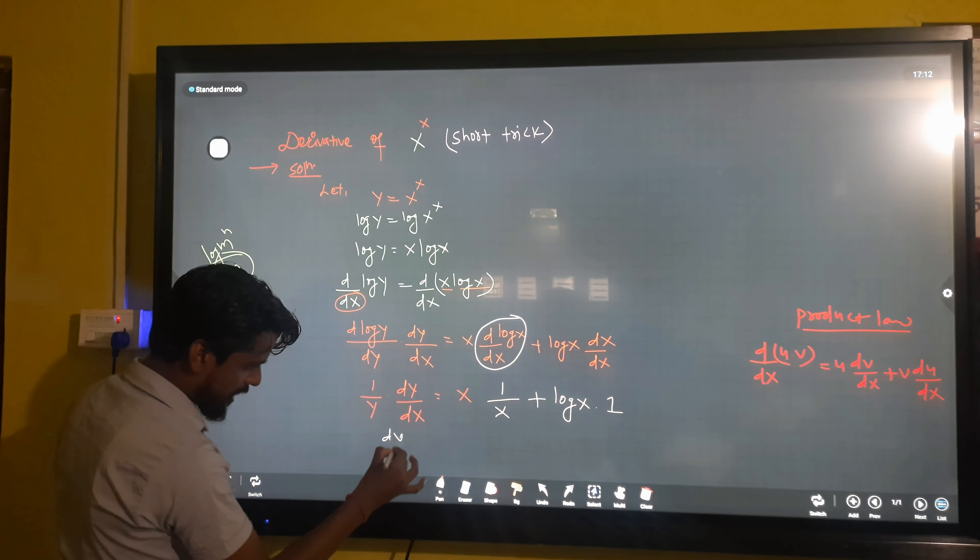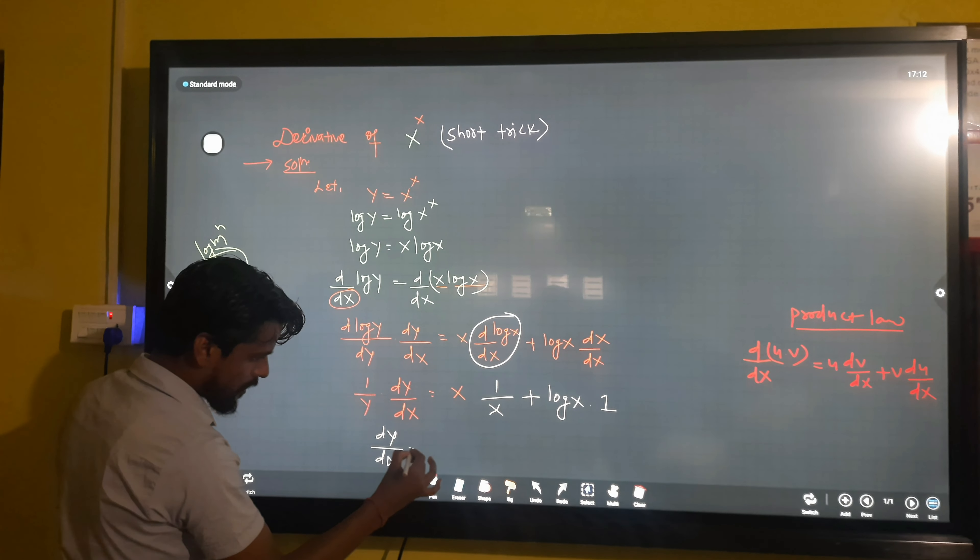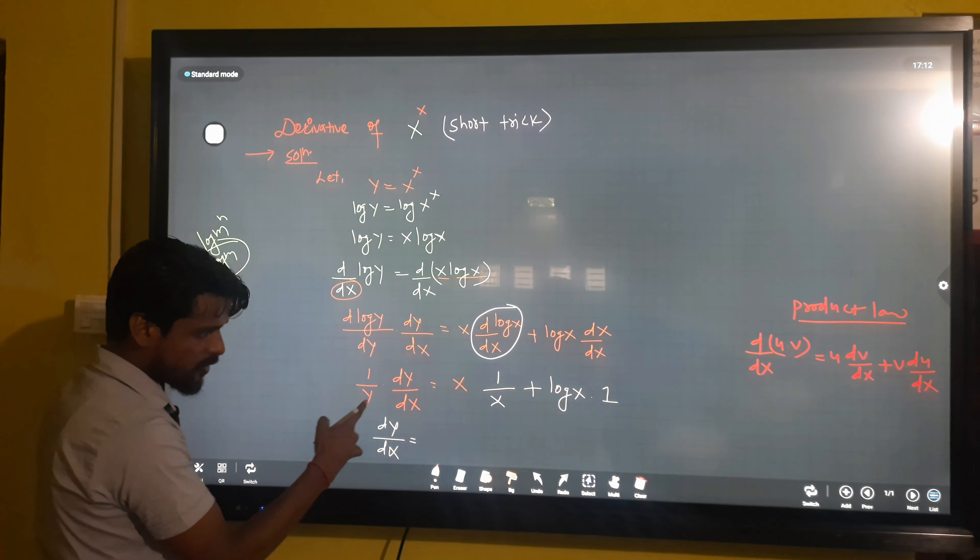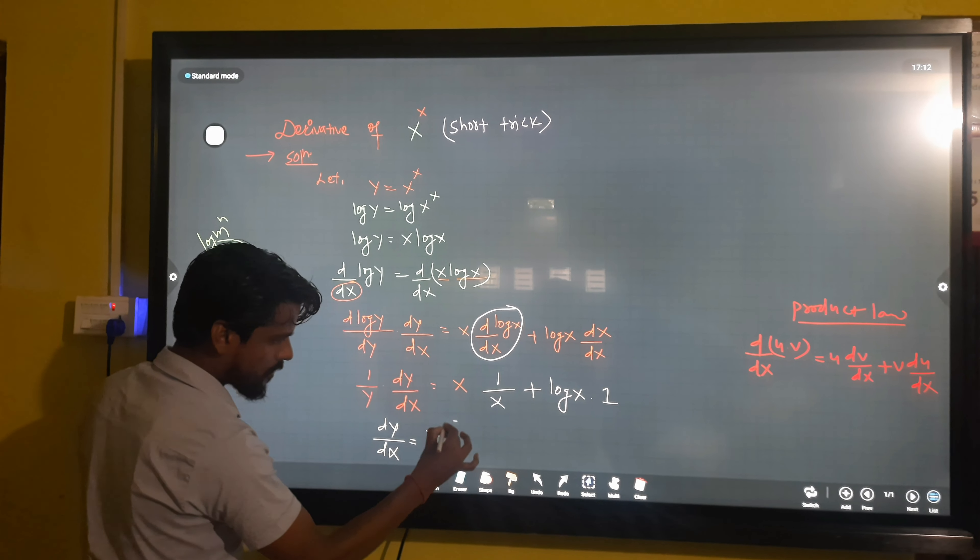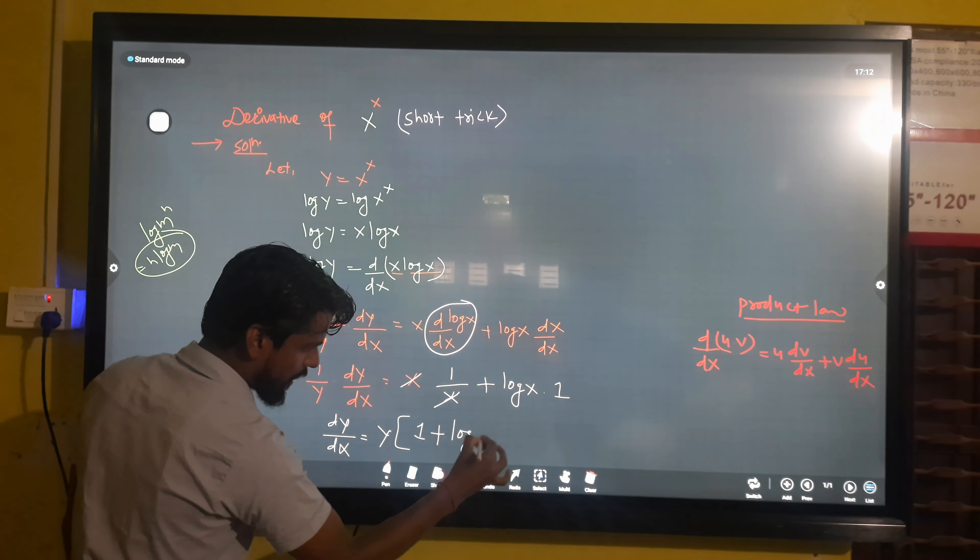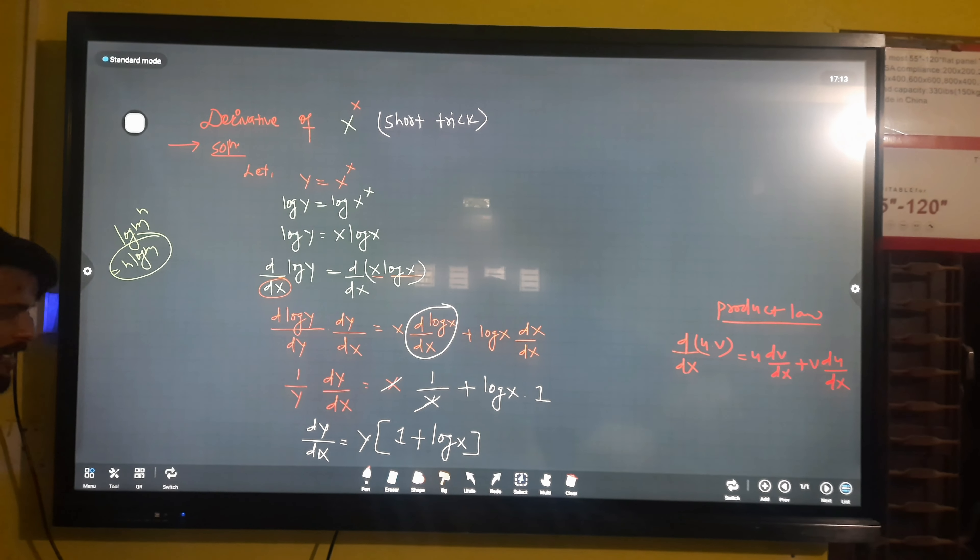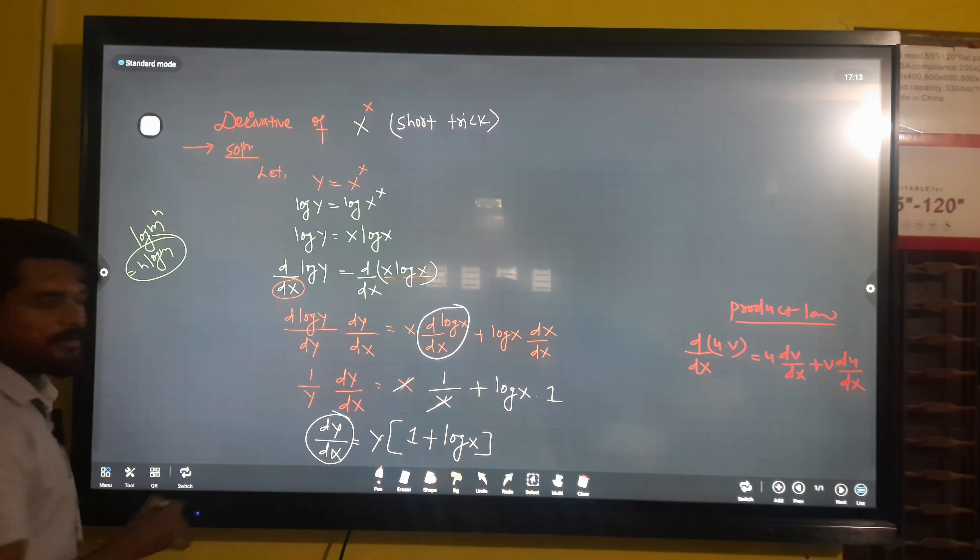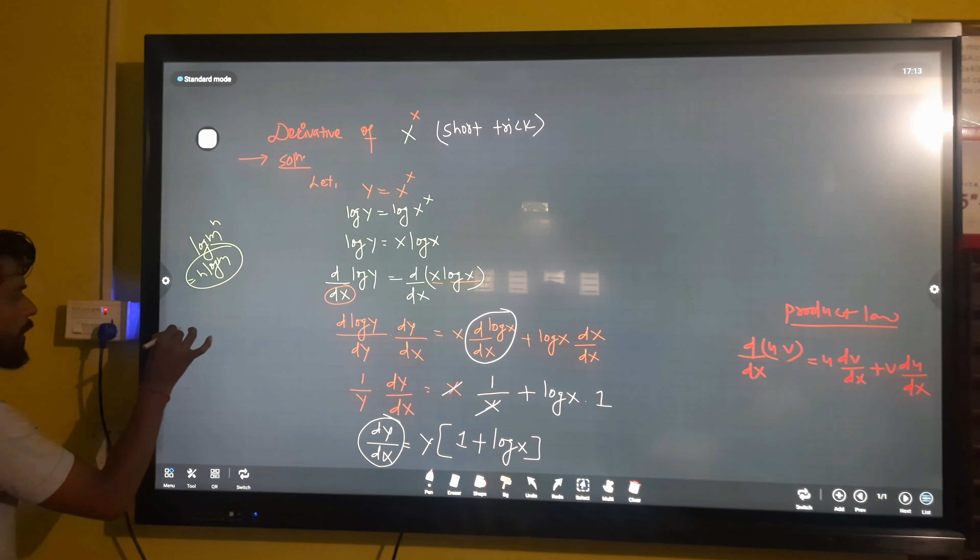So dy by dx... We multiply both sides by y. The x cancels, so what remains is one plus log x.